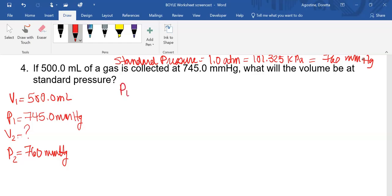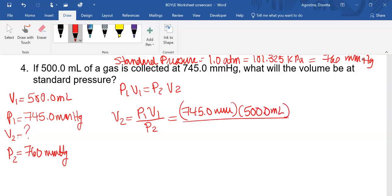So our equation is... We're solving for V2, so we're going to divide both sides by P2. So V2 is equal to P1V1 over P2. Now we're going to plug the numbers in. And our P2 was 760. Now, once again, we cancel out, and we plug this into our calculator.